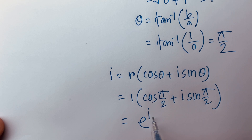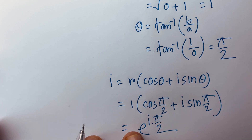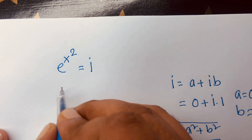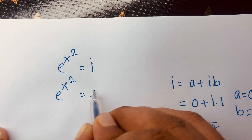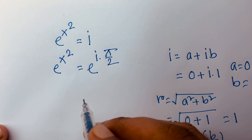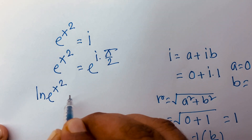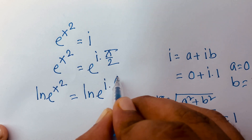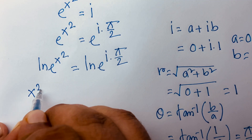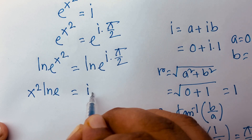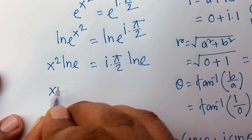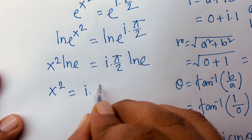Then I can say e to the power x squared is equal to e to the power i times pi over two. Then I use both sides ln, so ln(e^(x²)) is equal to ln(e^(i·π/2)). I let the exponent move in front: x squared · ln(e) is equal to i times pi over two · ln(e). We know that ln(e) is one, so x squared is equal to i times pi over two.